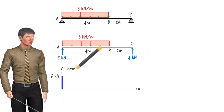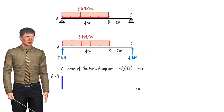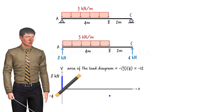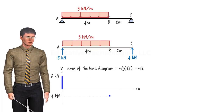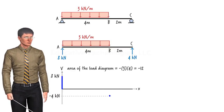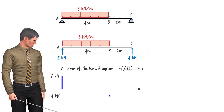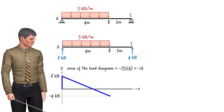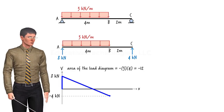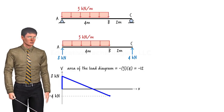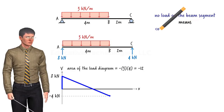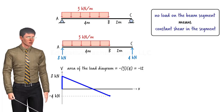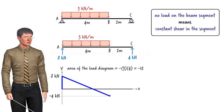Since the load is downward, we consider this a negative change, which means shear at the right end of the segment equals 8 minus 12, or negative 4 kilonewtons. Further, since the load is constant, shear is going to change linearly, so we connect these endpoints using a straight line. The rule is: when there is no load applied to the segment, shear within the segment does not change value; when there is a constant load applied, shear within it changes linearly.